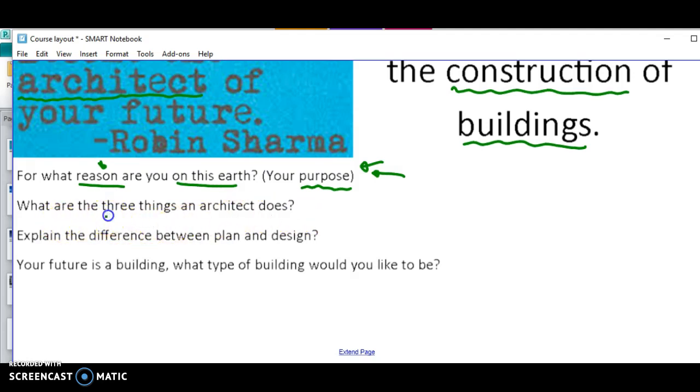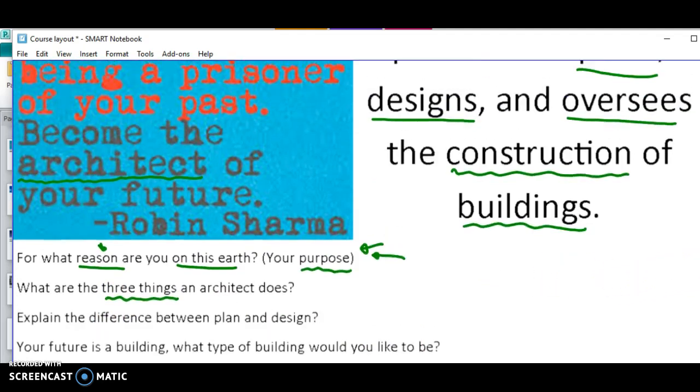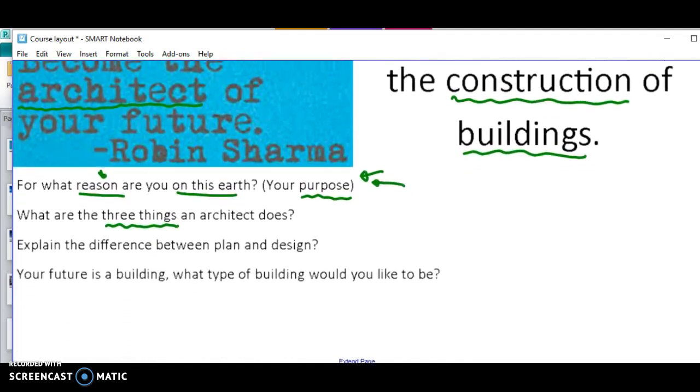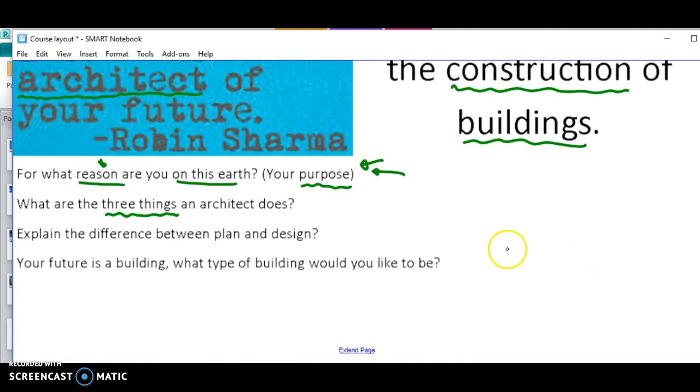Another question: What are the three things that an architect does? He plans, he designs, and he oversees construction. Think about those three things. Go and try to explain the difference between plan and design.